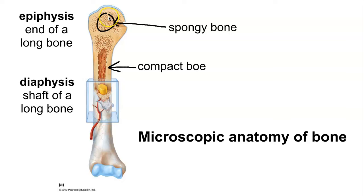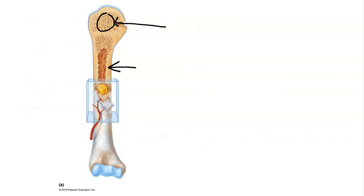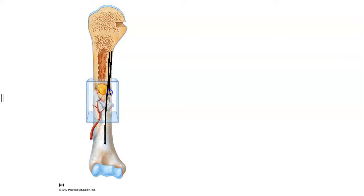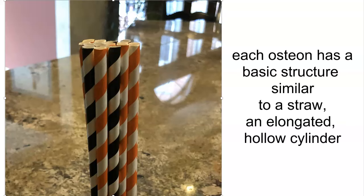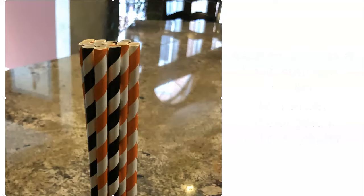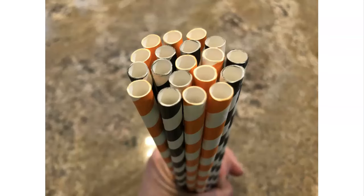Let's take a look at the microscopic appearance of compact bone first. Compact bone is made out of a basic subunit called an osteon, and an osteon runs the longitudinal axis of the bone. The osteons run the longitudinal axis of the bone and each osteon has a specific structure. The arrangement of osteons in compact bone kind of reminds me of a bundle of straws — packed together, running the longitudinal axis of the bone, and each osteon is hollow in the center, just like a straw.